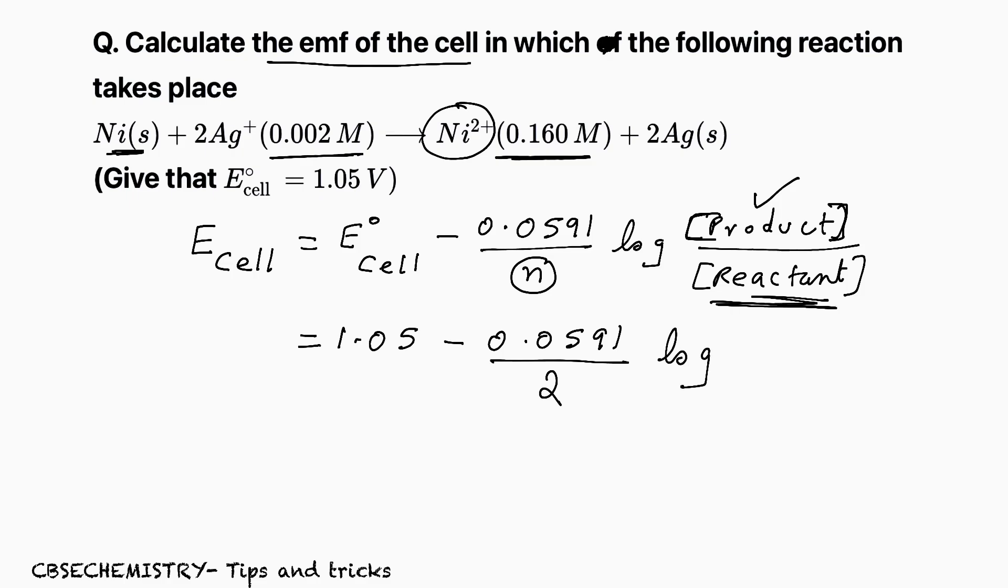Now, concentration of product, that is Ni2+, you can copy the value 0.160 by concentration of reactant 0.002. But here, one thing is very, very important. Check, what is the coefficient of Ag? That is 2. That will come as a power. Very, very important. Hope all of you understand.